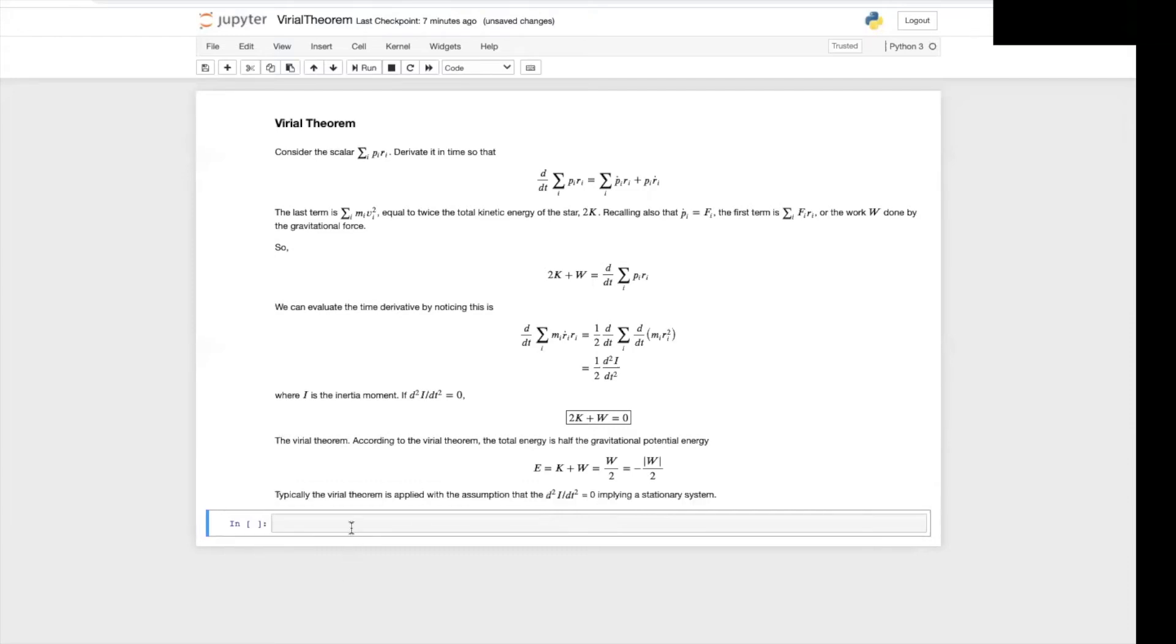Typically the Virial theorem is applied to the assumption that indeed the second derivative of the inertia moment is zero, implying a stationary system.